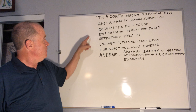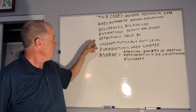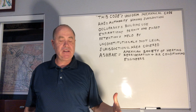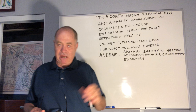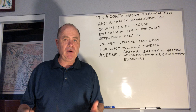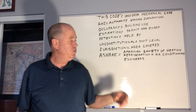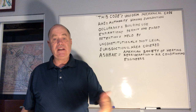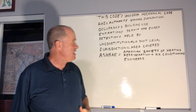Expiration is when the permit has expired, ended, or needs to be renewed. Retention — like with building plans, you have to retain the plans on the site so that when the building inspector shows up, the plans are available to roll out and check. Unconstitutional means not legal. Jurisdiction is the area covered — in our case, Los Angeles County. And ASHRAE, used quite often, stands for the American Society of Heating, Refrigeration and Air Conditioning Engineers.